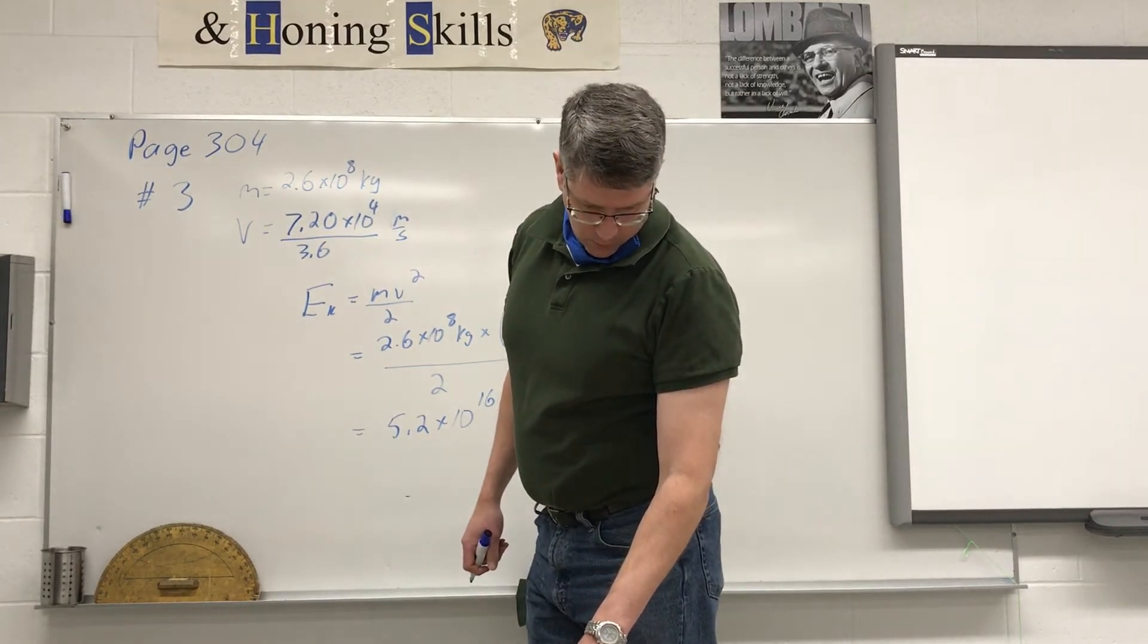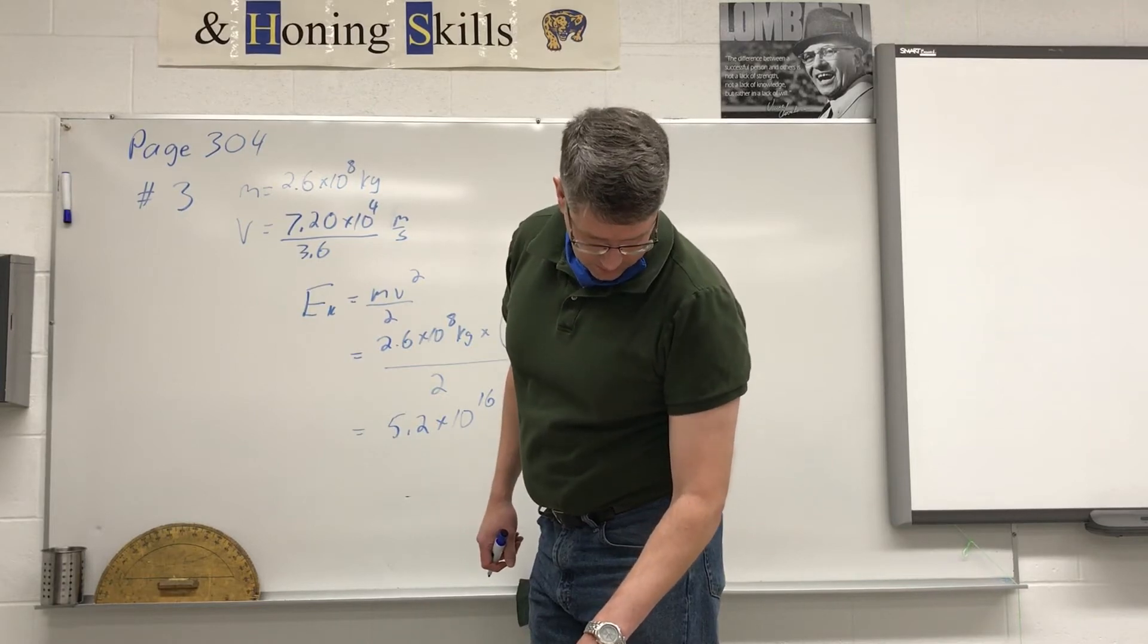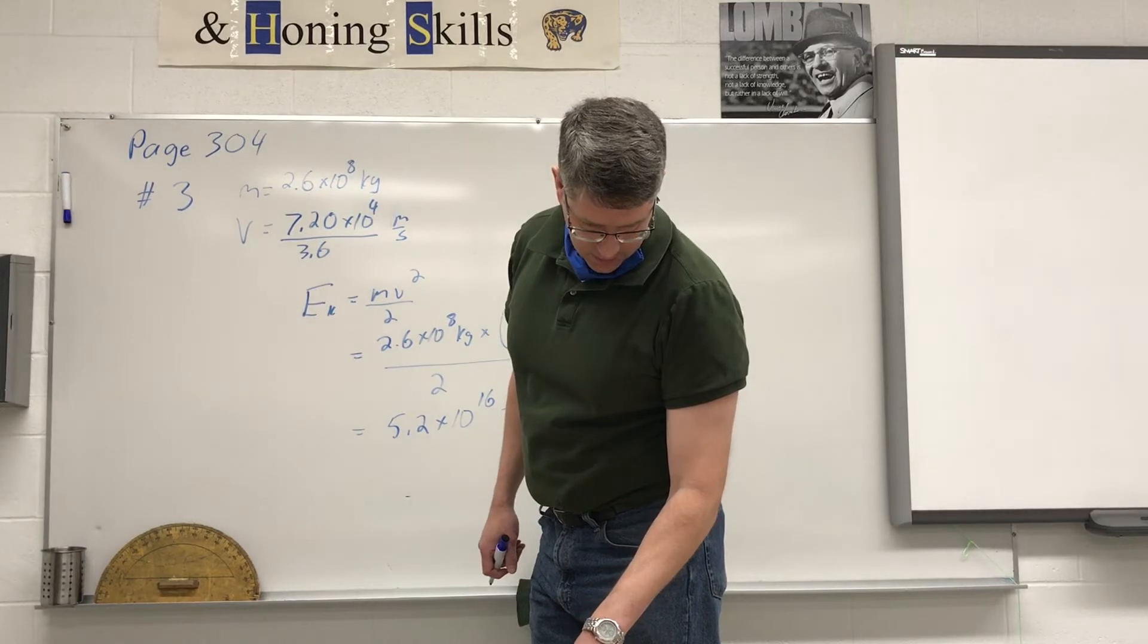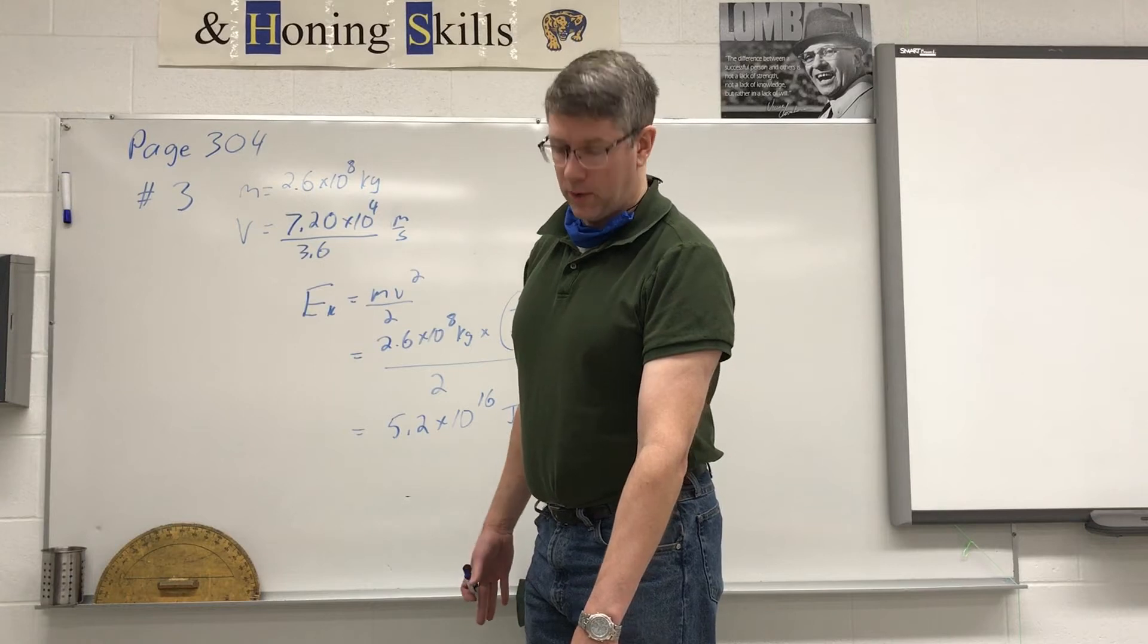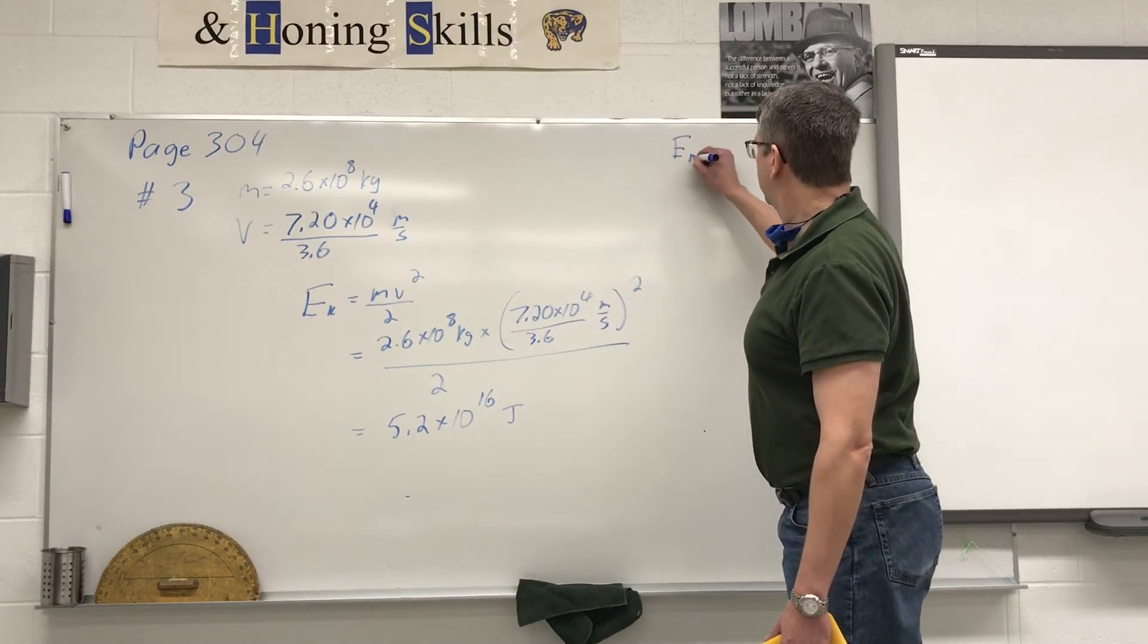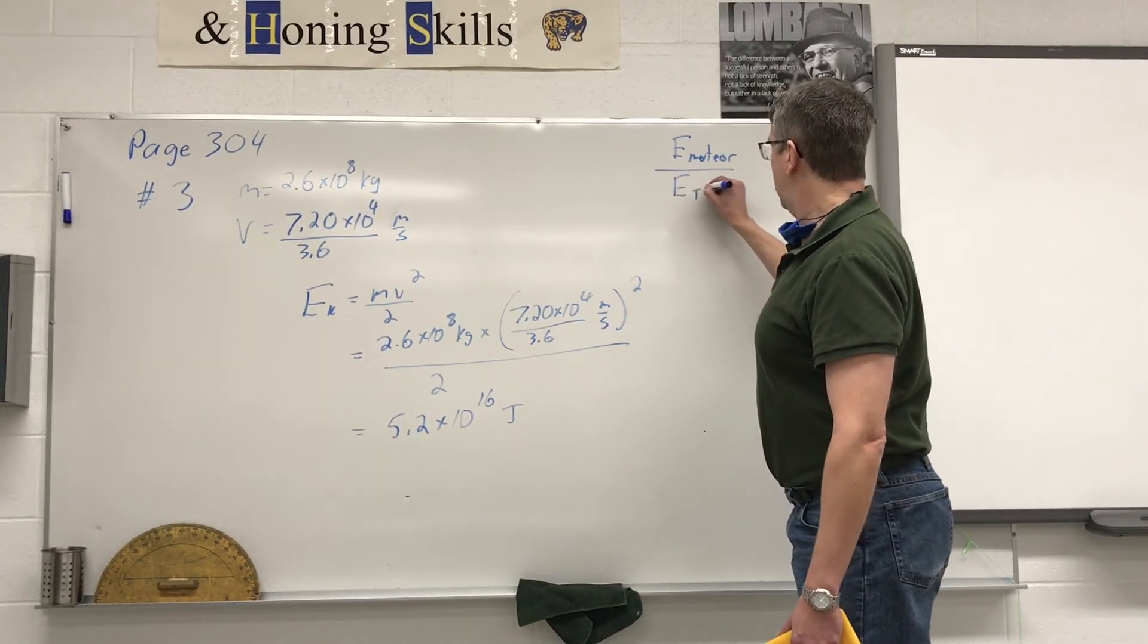Part B. When one ton of TNT explodes it releases about 4.6 times 10 to the 9 joules of energy. In terms of tons of TNT, how much energy did the meteor have at impact? So to calculate this we're looking for a ratio. We need to take the energy of the meteor and divide it by the energy of the TNT.